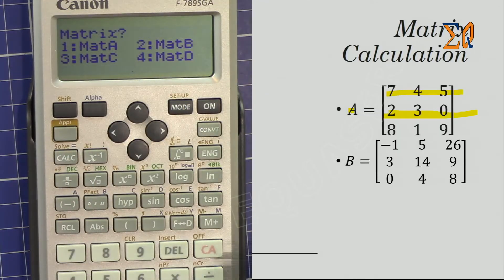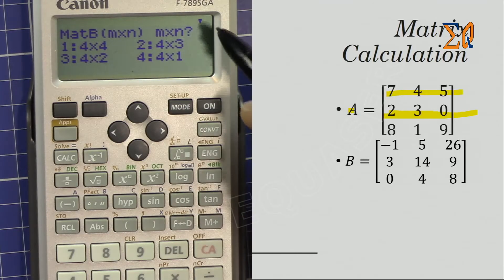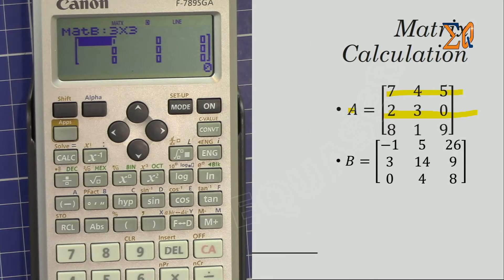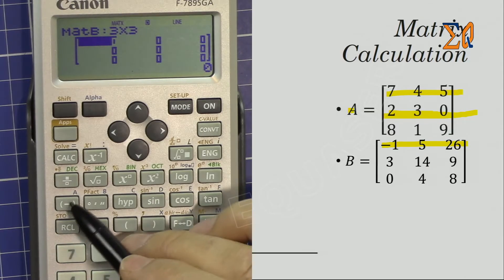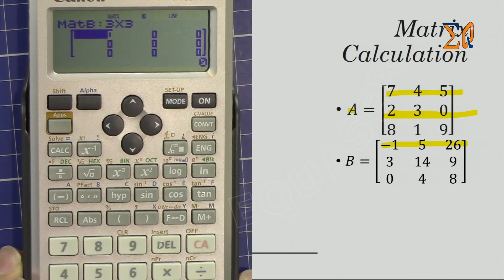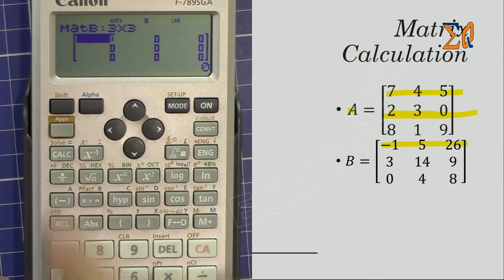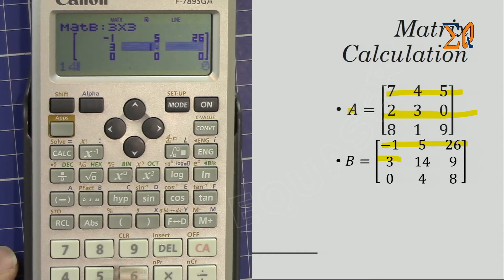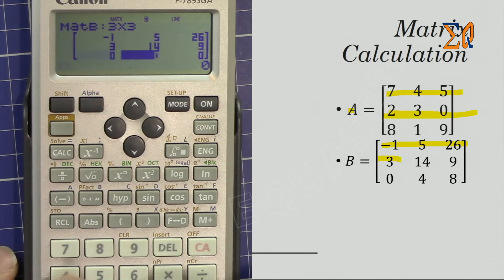Now let's enter matrix B. Press Apps, then two for Data, then press two for B. Go to the next screen and select three by three, which is option two. Enter the values: first row minus one, five, twenty-six. You can use either the minus button or the negative sign — both work. Second row: three, fourteen, nine. Third row: zero, four, eight. All values entered — press clear all.